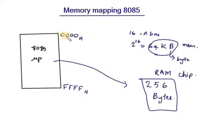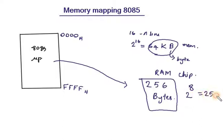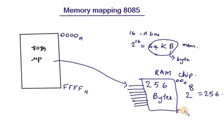The maximum address range is 0000H to FFFFH. For a 256-byte RAM chip, the number of address lines needed will be 8, because 2 raised to 8 equals 256. So this is how to connect the address lines — this is the maximum number of address lines, and we will have the memory mapping.